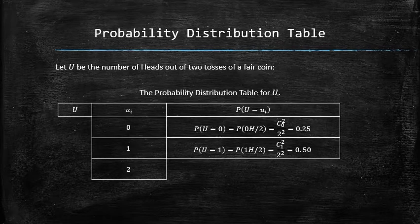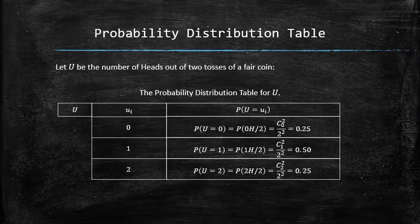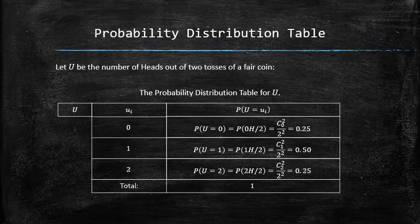Similarly, the probability that u equals 1 is the same as the probability of 1 head among two tosses, which we again compute using the formula from the previous section, and is equal to 0.5. It is easy to verify that the sum of all probabilities is equal to 1.